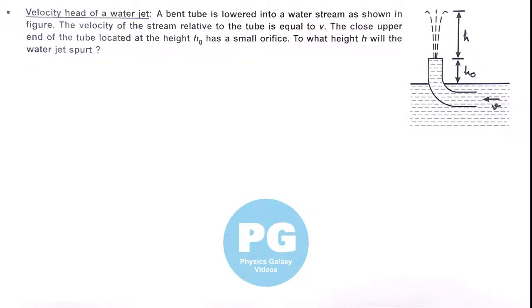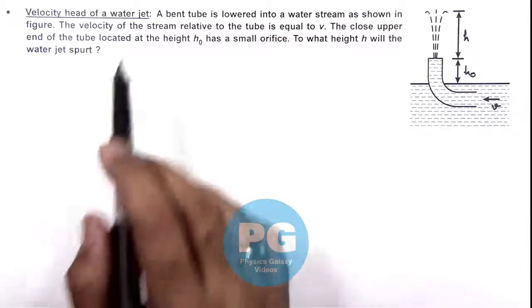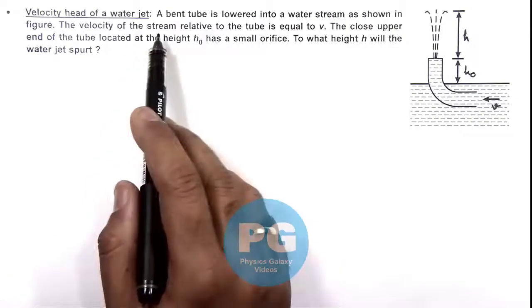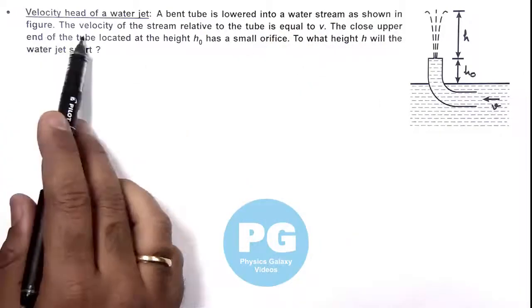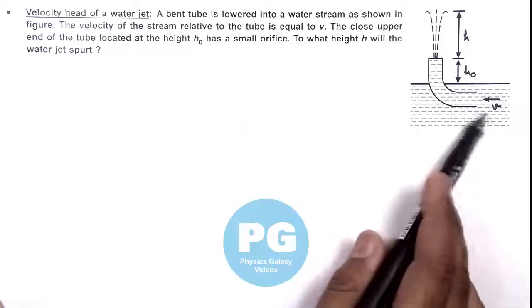In this illustration we will discuss the velocity head of a water jet. Here we are given that a bent tube is lowered into a water stream as shown in figure, and the velocity of stream relative to the tube is equal to v.